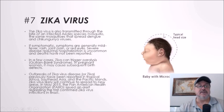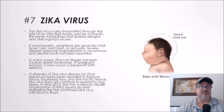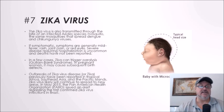Number seven: Zika virus. The Zika virus is also transmitted through the bite of an infected Aedes species mosquito — the same mosquito that spreads dengue and chikungunya. If symptomatic, symptoms are generally mild: fever, rash, joint pain, or red eyes. Severe disease requiring hospitalization is uncommon and deaths have rarely been reported. In a few cases, Zika can trigger Guillain-Barré syndrome, and in pregnant women it can cause subsequent birth defects including microcephaly. Outbreaks have been reported in tropical Africa, Southeast Asia, and the Pacific Islands. In May 2015, the Pan American Health Organization issued an alert regarding the first confirmed Zika infections in Brazil.